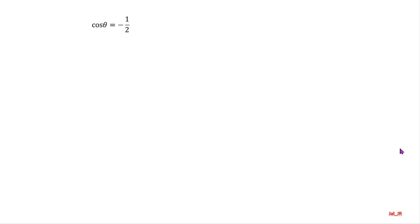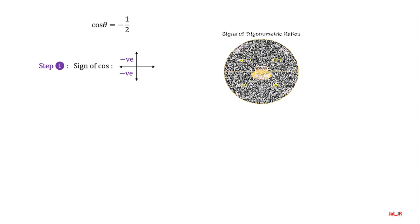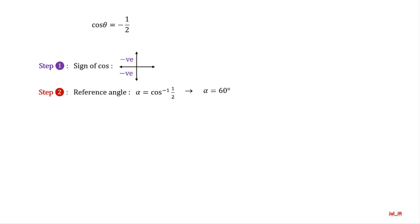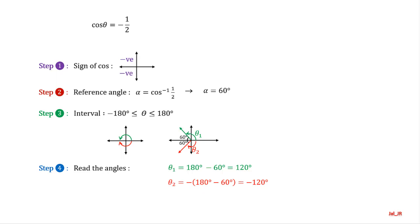Follow the steps of solving basic trigonometric equations. First step: negative cosine is in the second and third quadrants. Second step: the reference angle alpha is 60 degrees. Third step: the interval of solution is from negative 180 to 180 degrees. This means we have to read the angle counterclockwise half a round, and clockwise half a round. The first solution is in the second quadrant, read the angle counterclockwise: theta sub 1 is 180 minus 60, which equals 120 degrees. The second solution is in the third quadrant, read the angle clockwise: theta sub 2 is negative (180 minus 60), which equals negative 120 degrees.